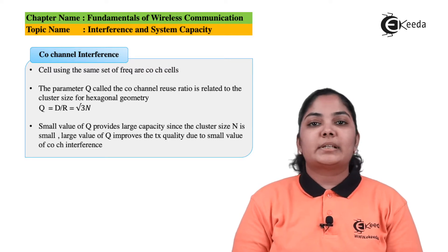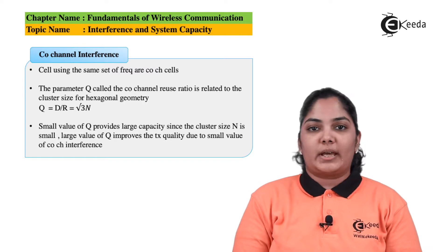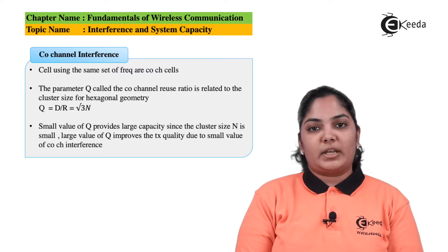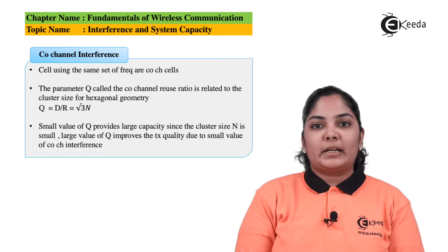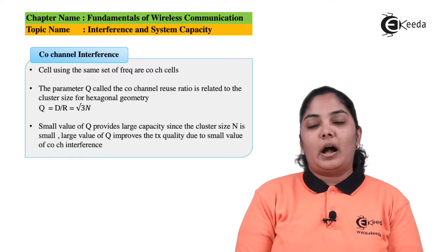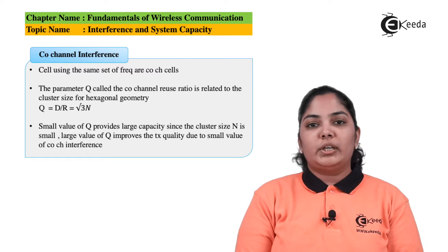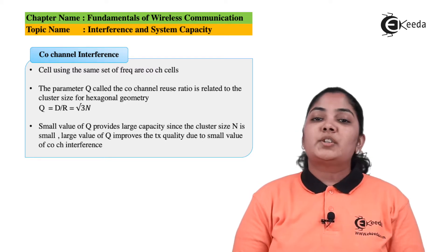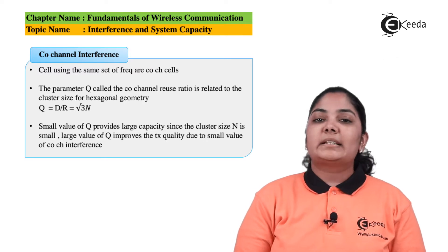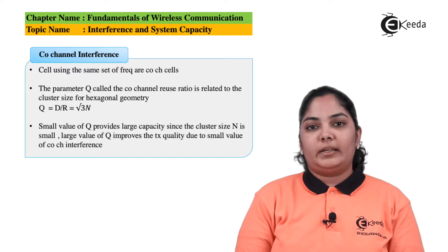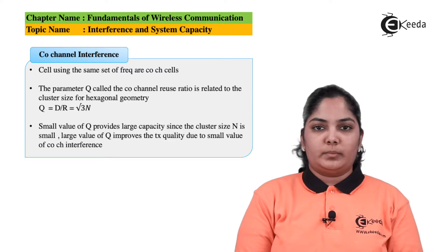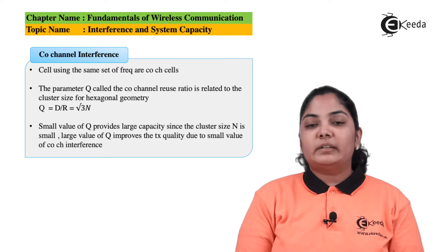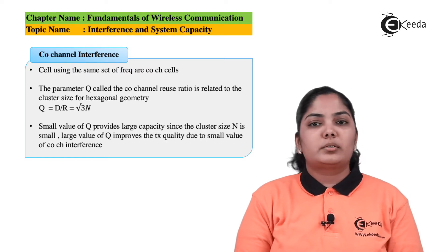Cells using the same set of frequencies are called co-channels. The parameter Q is called the co-channel reuse ratio, given by D/R, which is also equal to the square root of 3N. A smaller value of Q indicates that the capacity is very high. If Q is smaller, it means N — the number of cells in a cluster — is also smaller.